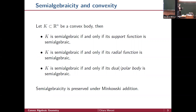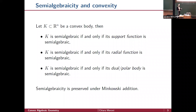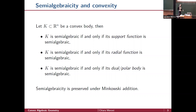Moreover, this notion is preserved under Minkowski addition: if you have a finite family of semi-algebraic convex bodies and take their Minkowski sum, you still have a semi-algebraic convex body. When you move to infinite sums this is not true anymore, but this justifies that it makes sense to consider the class of semi-algebraic convex bodies. This is the part about real algebraic geometry.